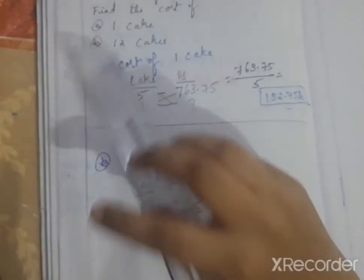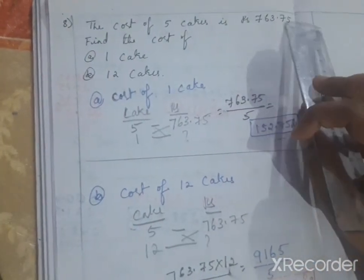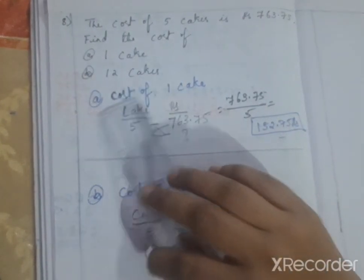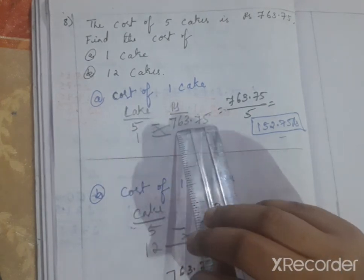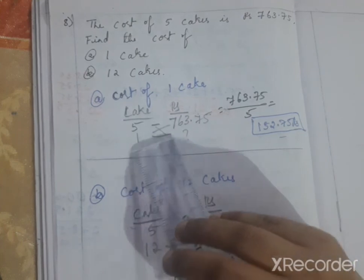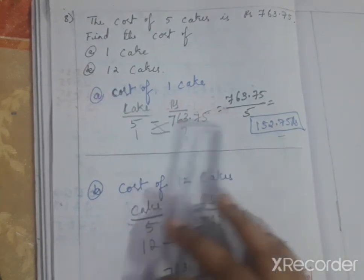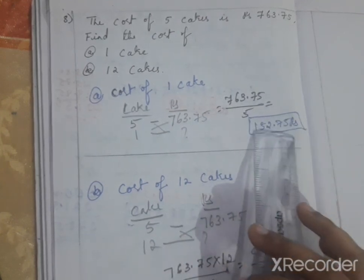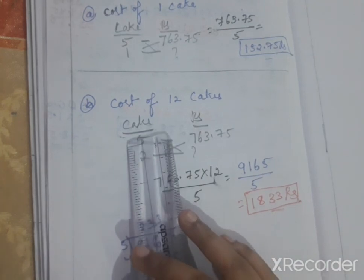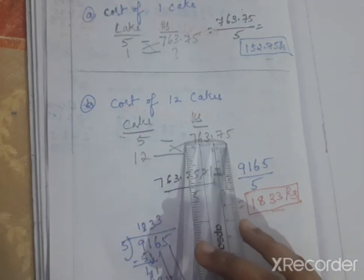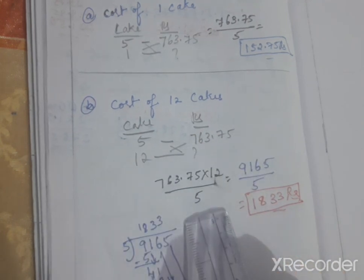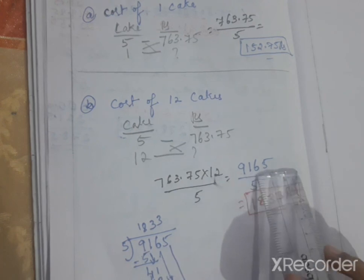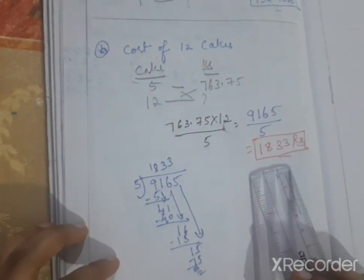Eighth question: The cost of 5 cakes is rupees 763 and 75 paisa. Find the cost of 1 cake and 12 cakes. Using cross multiplication: for 5 cakes the cost is 763.75; for one cake it is 763.75 divided by 5. For 12 cakes: 12 into 763.75 divided by 5. First multiply 763.75 into 12 to get 9165, then divide by 5. The answer is 1833.